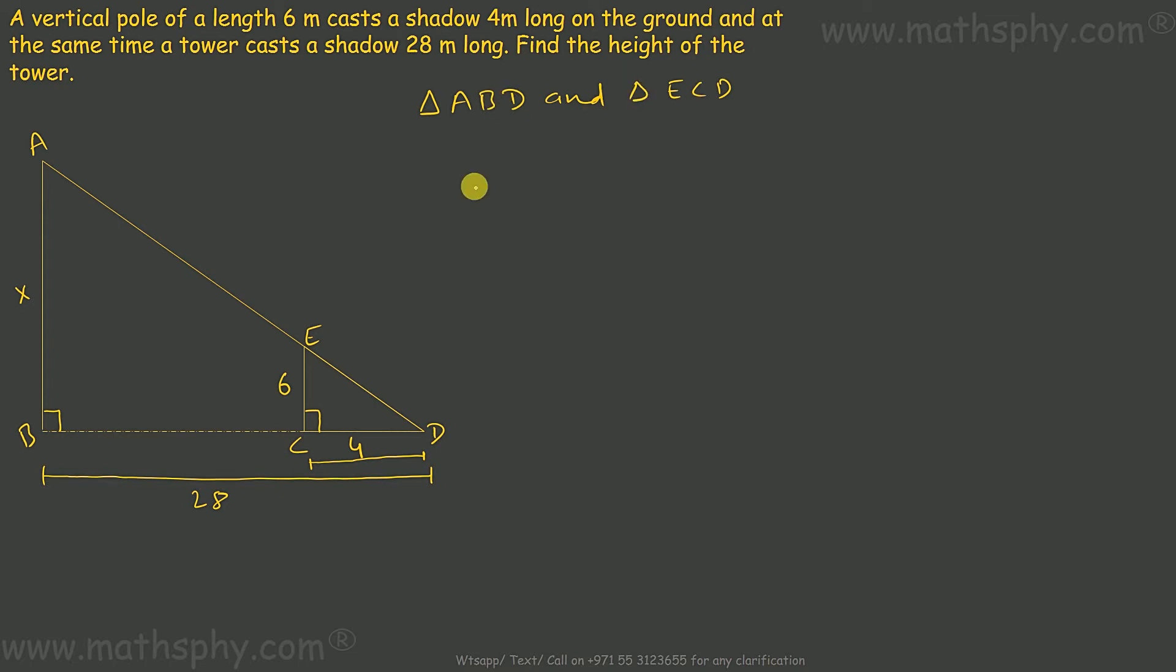In these two triangles, from ABD, angle B would be equal to angle C from ECD. Both are 90 degrees.